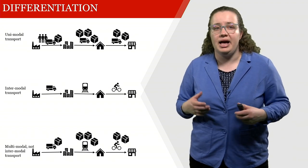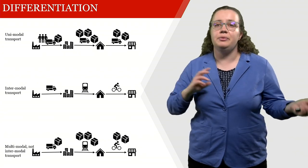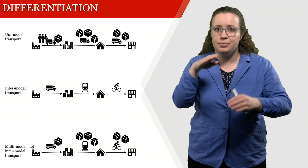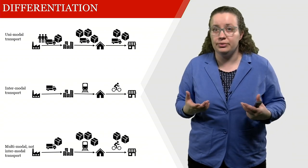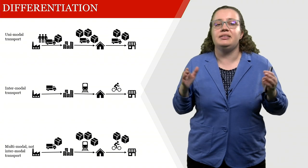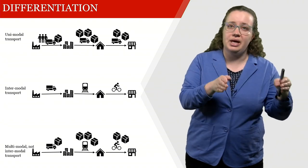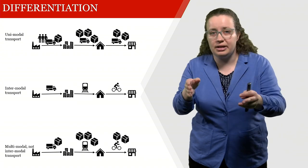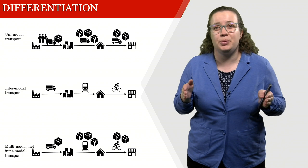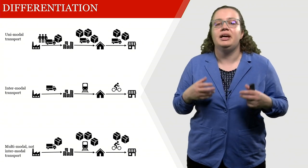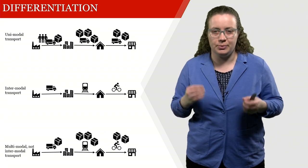If we have multimodal but not intermodal transport, we have, for example, very small boxes storing clothing. These boxes are once in one container, then in another container, then directly thrown into the train, and at the end the bike transports them directly. That is what we refer to as multimodal but not intermodal transport.